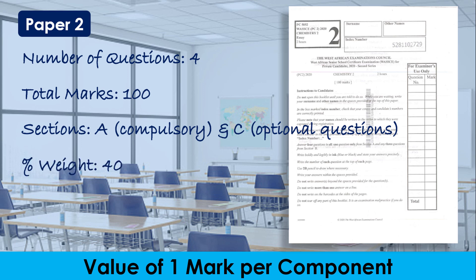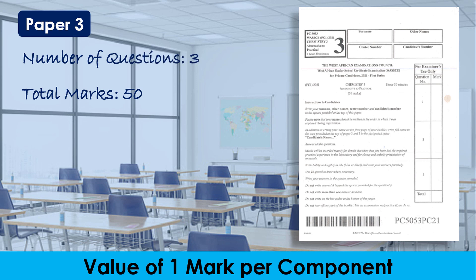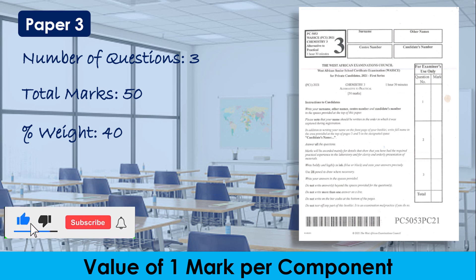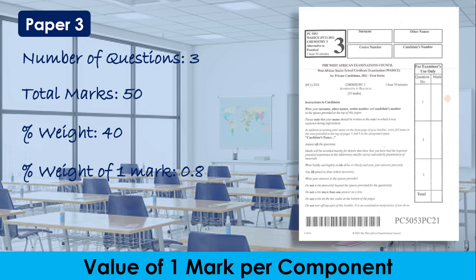The essay has a weighted score of about 40%, meaning the value of one mark in the essay paper is about 0.4%, obtained by dividing 40% by 100. Paper 3, the practical examination, just like the objective test, is made up of 50 marks shared among three questions. This paper contributes a weight of 40% to the overall score, meaning the value of one mark is about 0.8 — obtained by dividing 40% by 50.